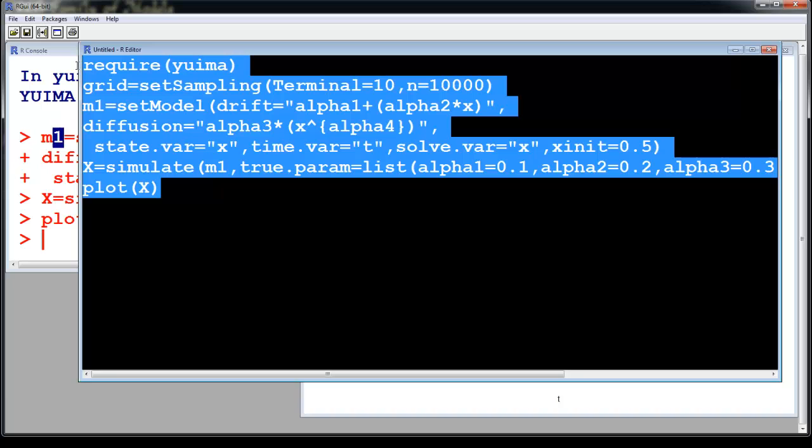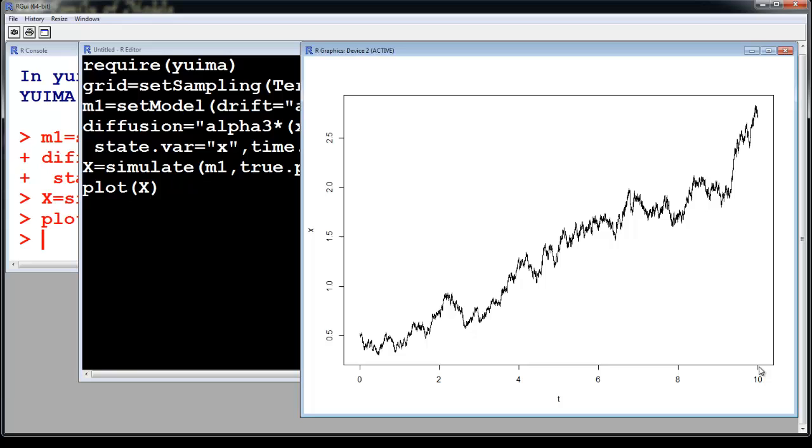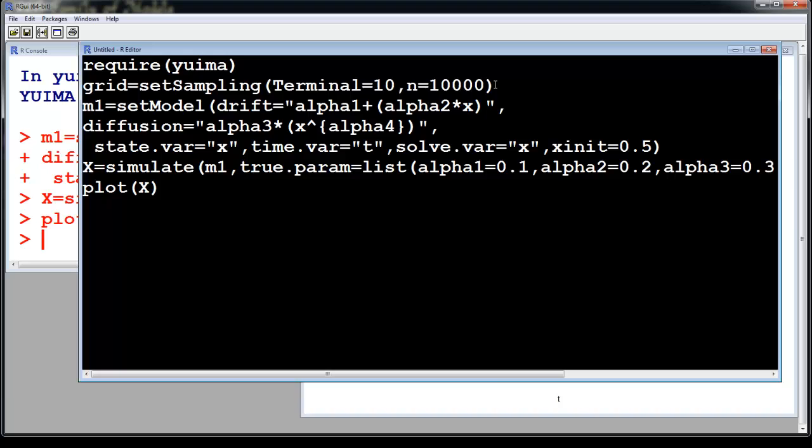So let us do this now. Select the code, hit the run button. And now see your terminal point here is 10. You start at 0, you're starting at 0.5. So again, your time difference is nothing but 10 over this 10,000.